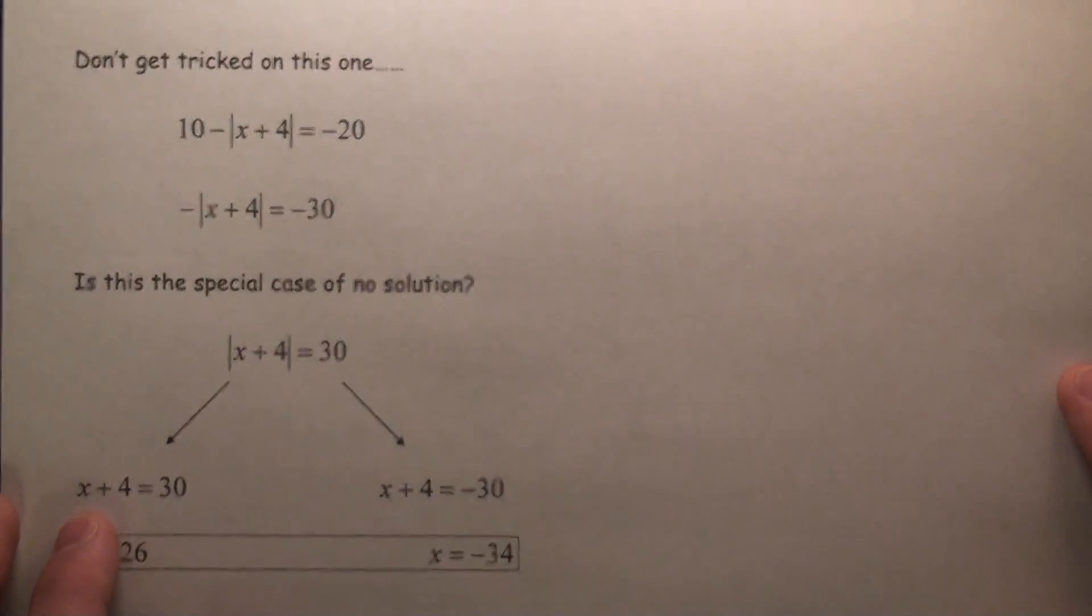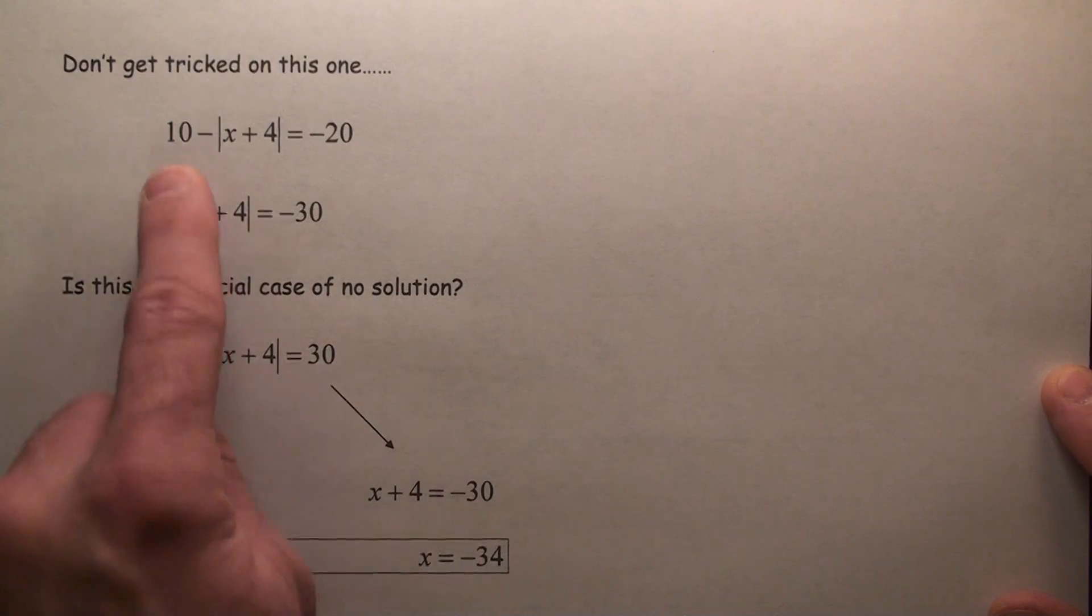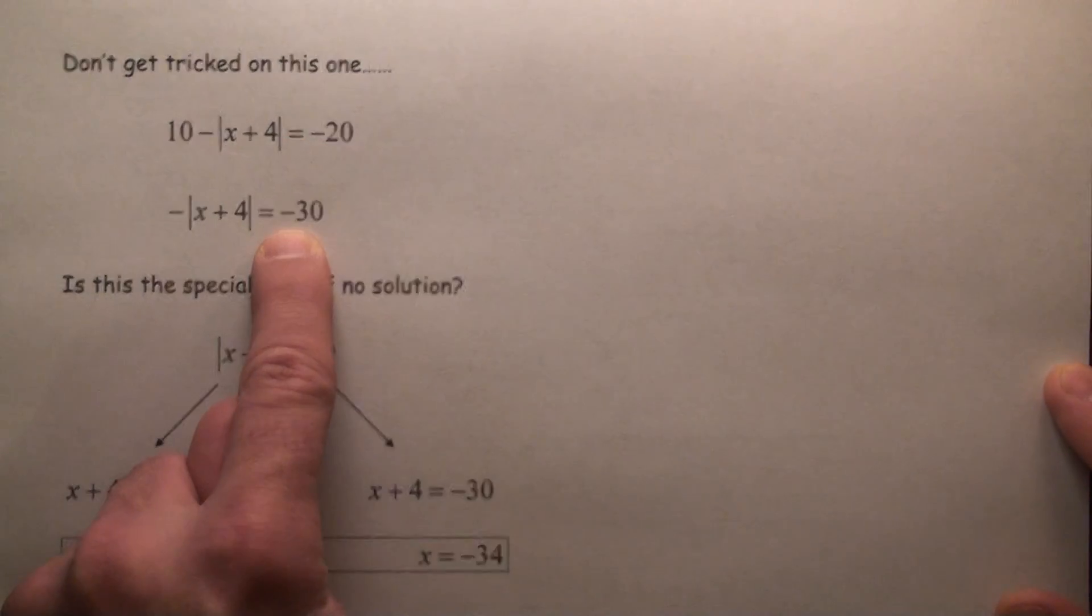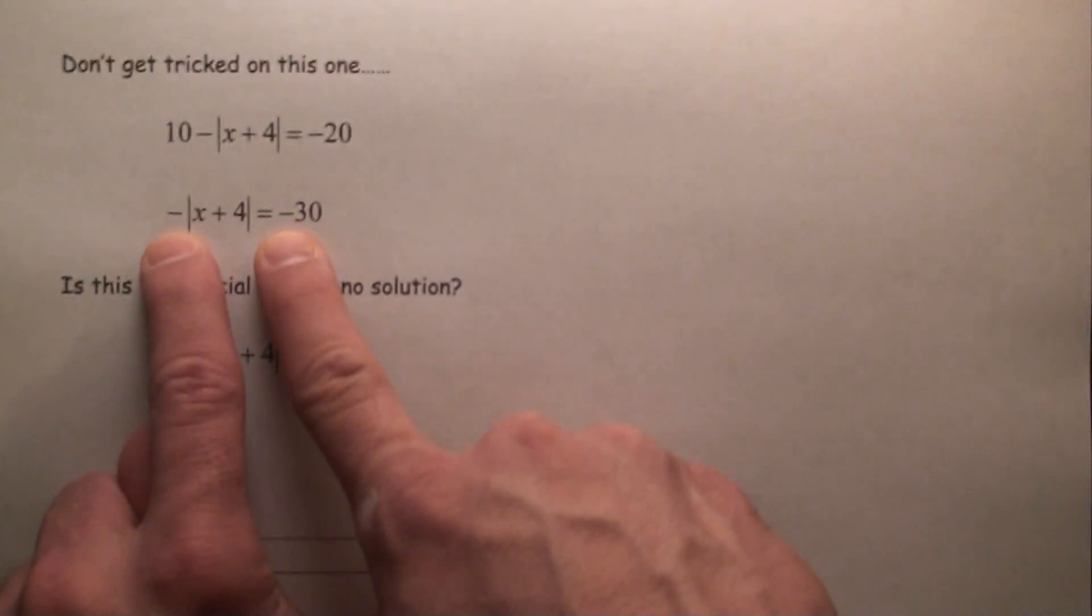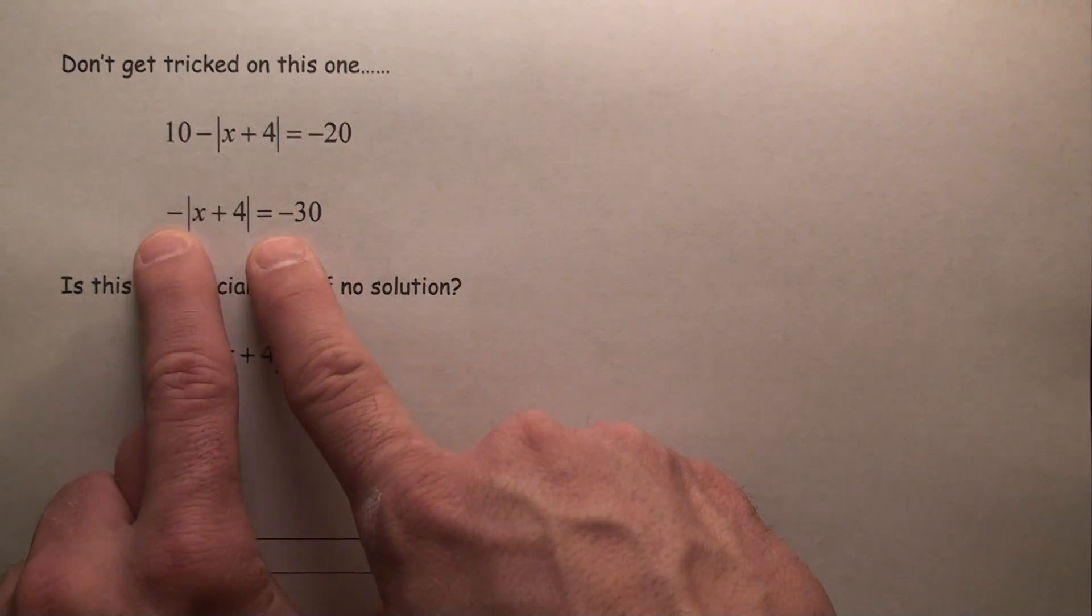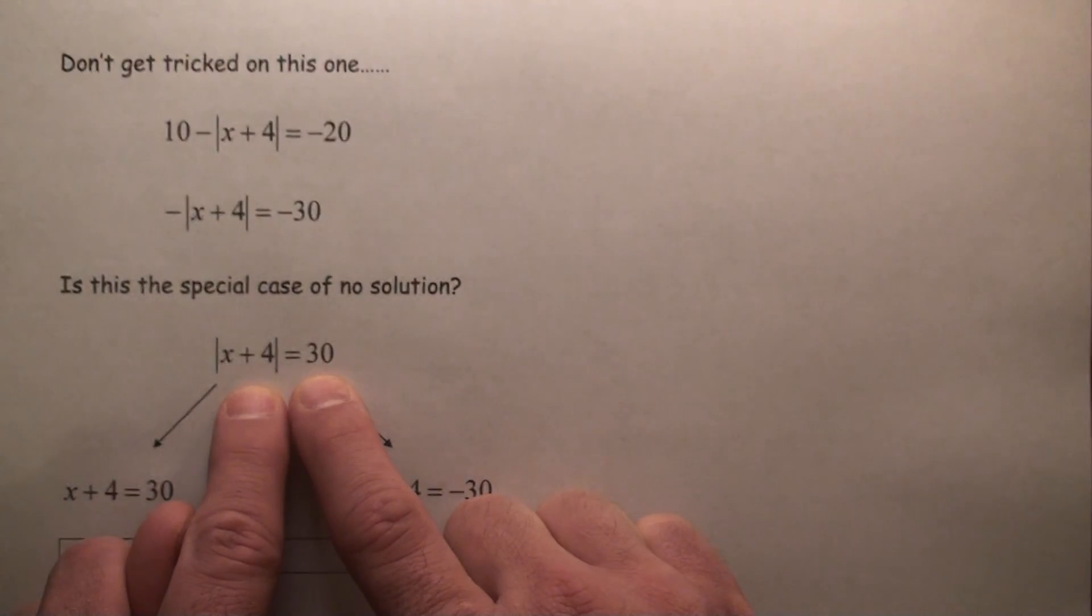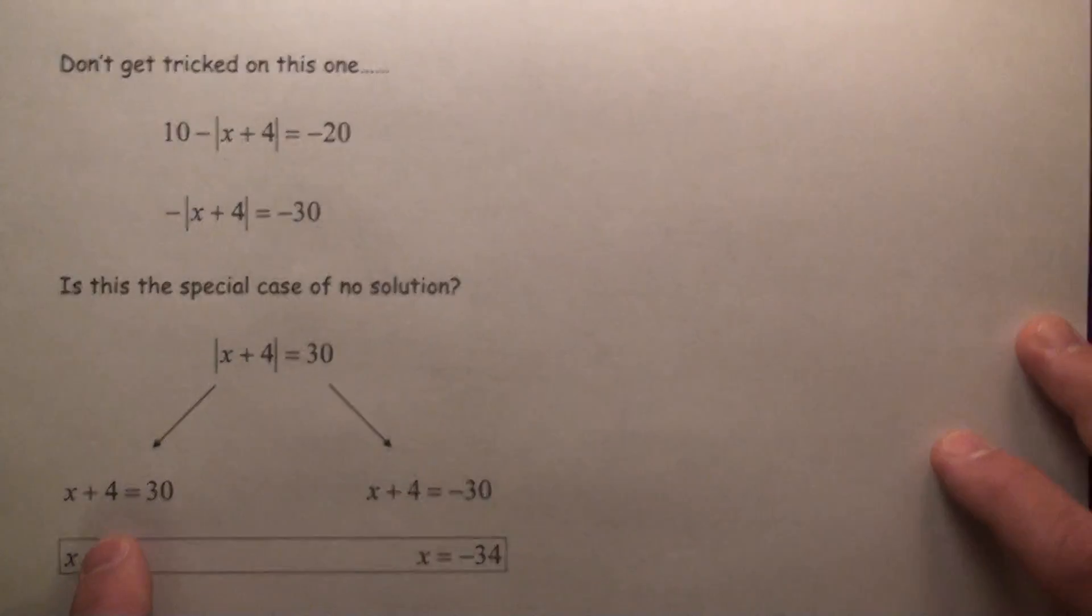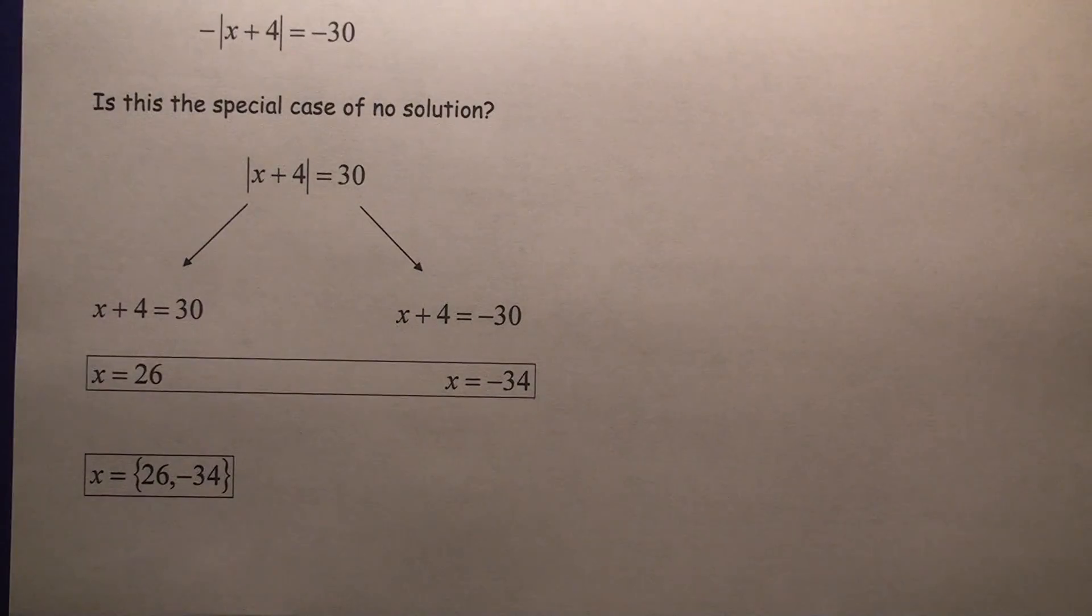Don't get tricked by this one. Do not write down no solution quite yet. You're going to subtract 10 from both sides. You're going to get negative 30. Now don't get tricked here either. You're going to divide both sides by negative 1, and you're going to get positive 30. So therefore, there is a solution. It's just like the other ones.